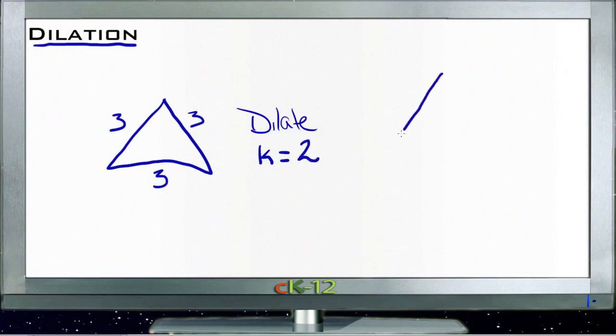And now we're going to dilate it by what we call a k factor. The k factor is the scale that we dilate it by. Dilate it by a factor of two, then the new triangle would be the same shape, making allowances for my lack of artistic ability, but it would be twice as big in each dimension.